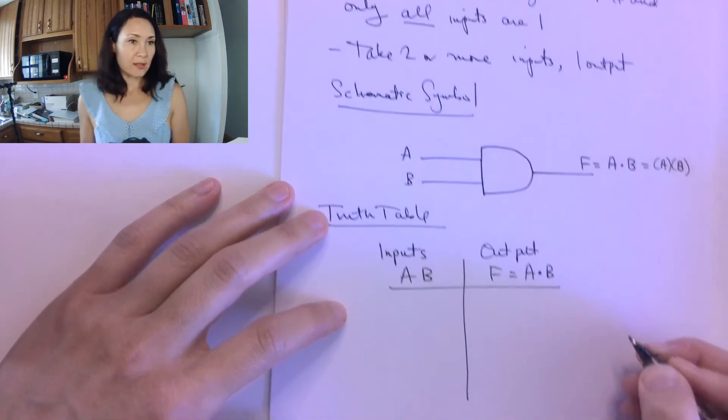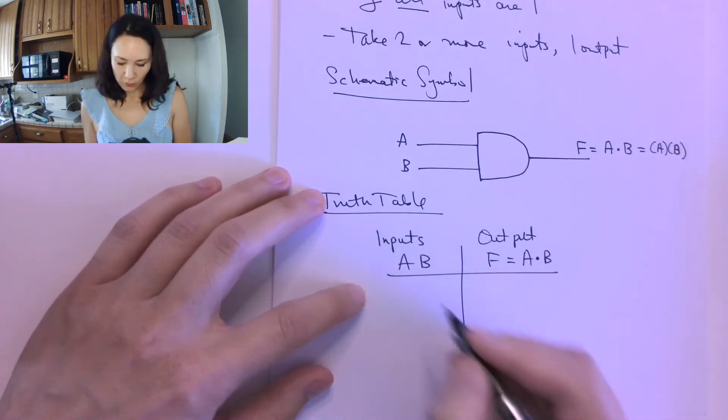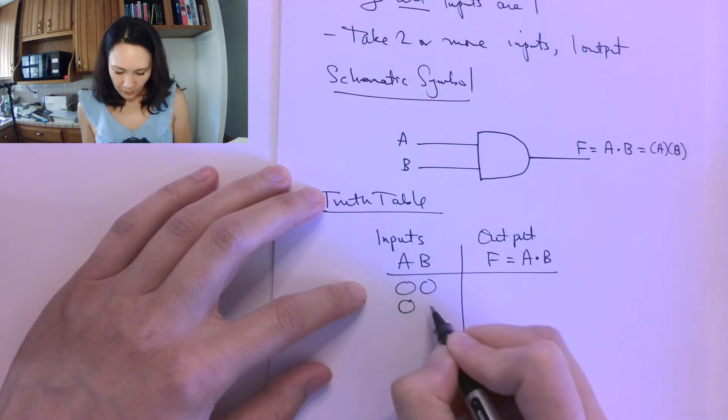And my truth table looks like this. I have to have every combination, right? So I have to have 0, 0, 0, 1, 1, 0, 1, 1.